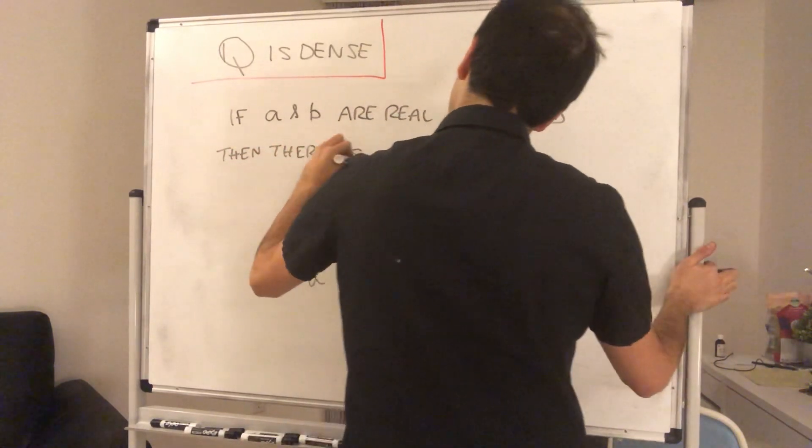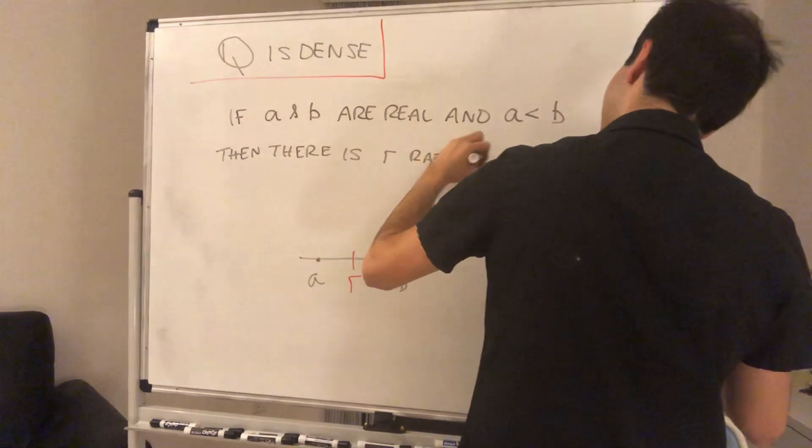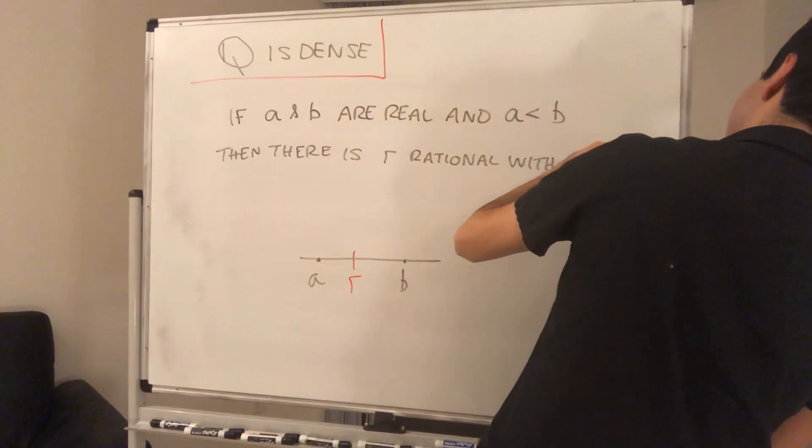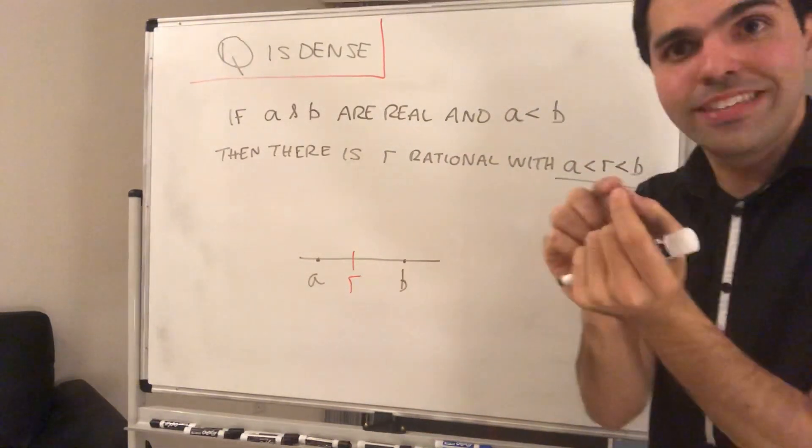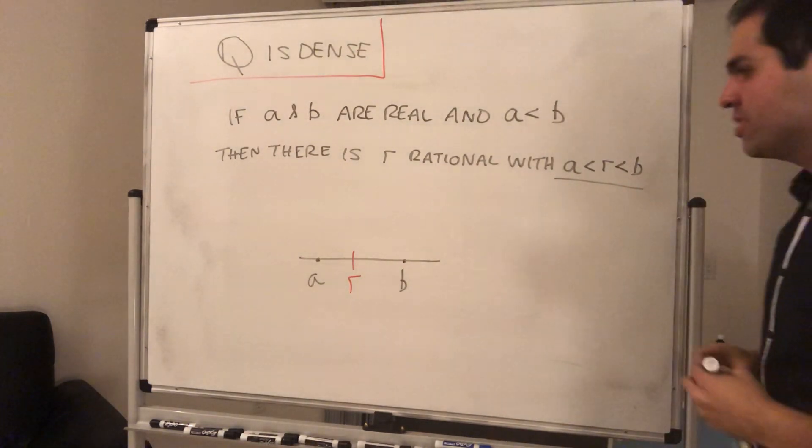There is r rational with r between a and b. So again, no matter how close a and b are, you can always find a rational number between them.